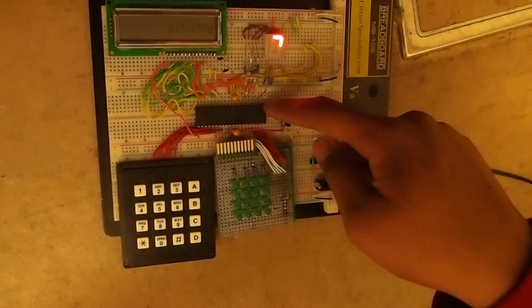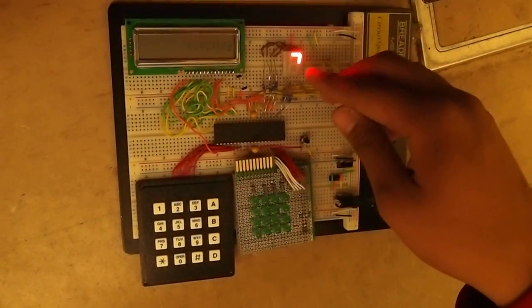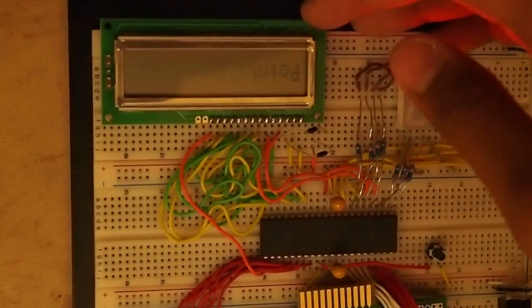This is the Atmega32 microcontroller. This is my 7 segment display, and this is my LCD display which outputs the points.